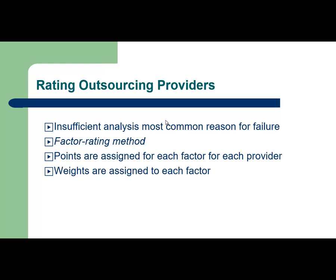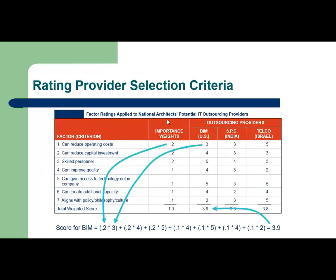To outsource, companies must analyze and evaluate their contractors. A factor rating method can be used to evaluate and assess these contractors, where points and weights are assigned to each factor. This slide shows an example of the factor rating process and calculations with three companies — PIM, SPC, and Tilco. By multiplying the weight with the rating for each activity, PIM will be selected because they scored the highest in the overall selection criteria.